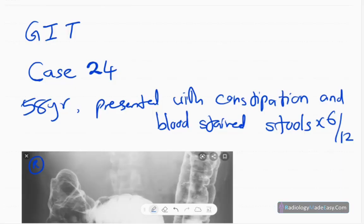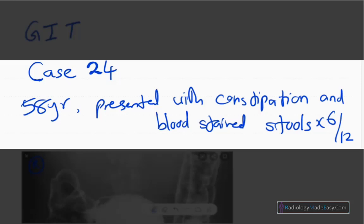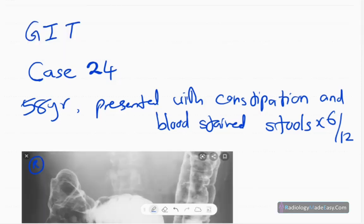Hi, welcome back everyone. Today we are going to discuss case number 24 in GIT contrast studies. Our case today is a 58-year-old patient presented with constipation and blood-stained stools for six months duration.